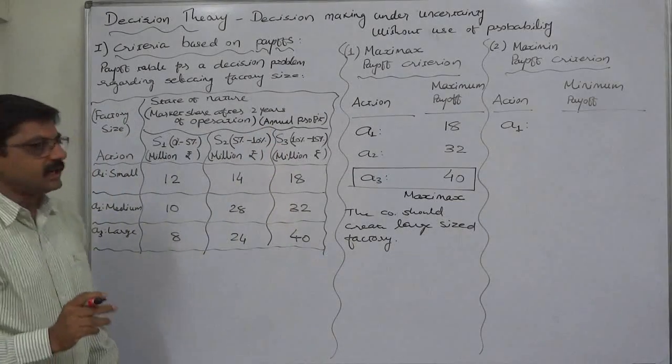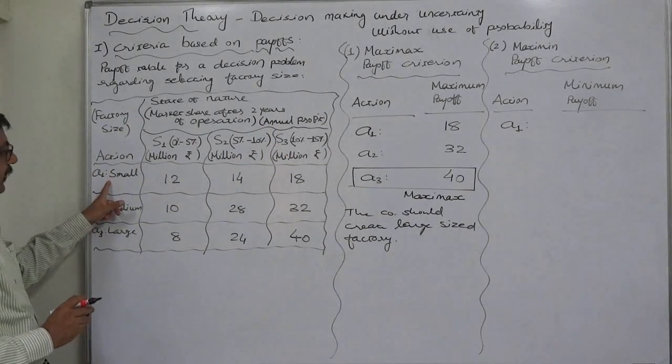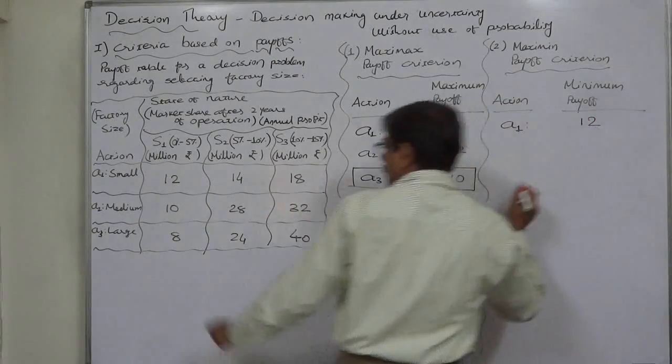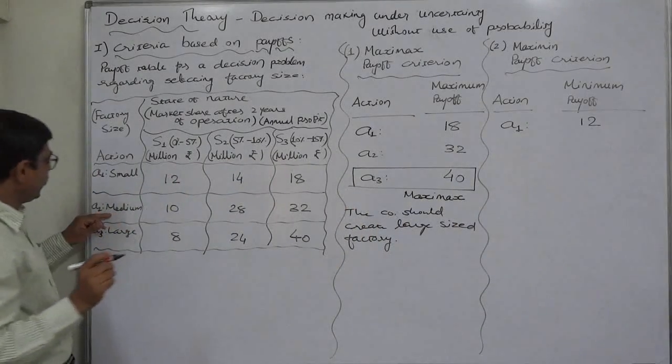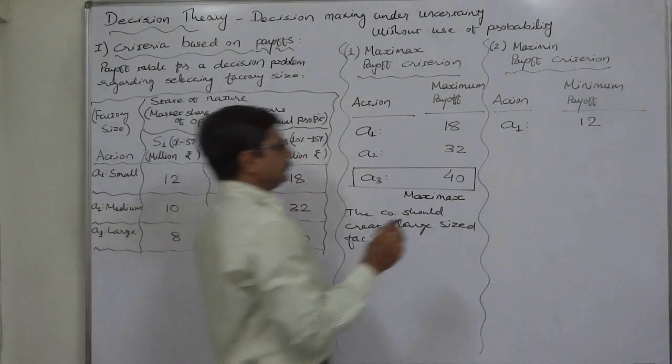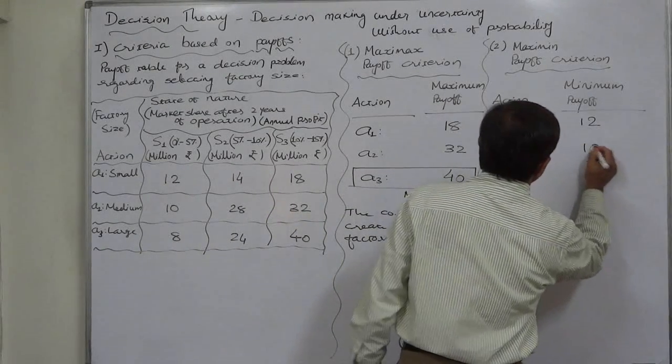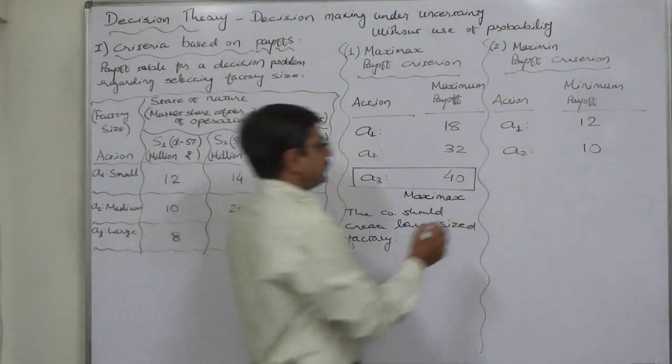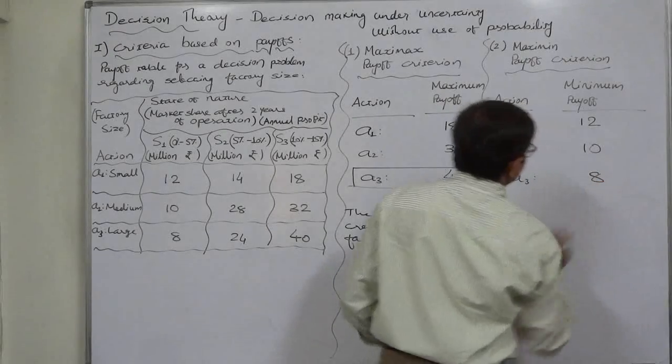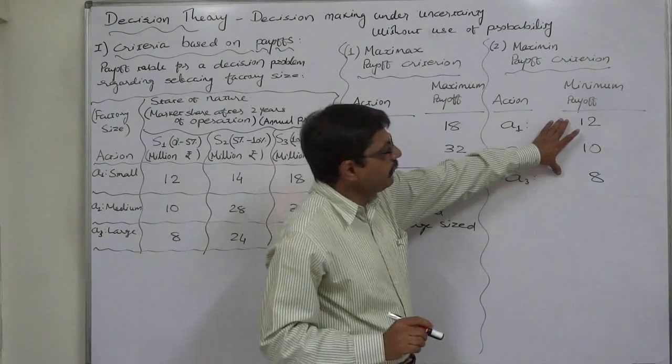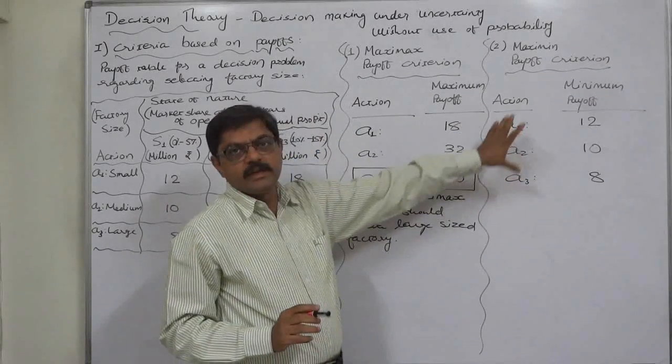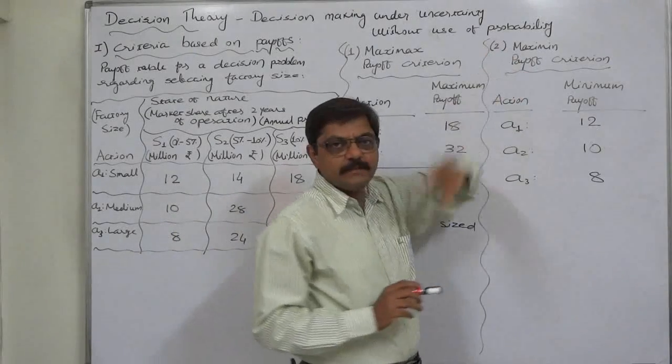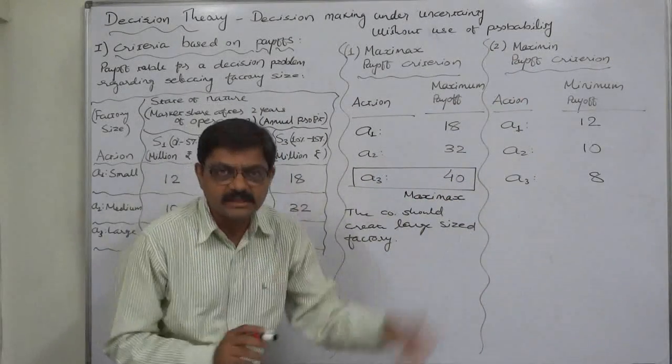In case of A1, minimum is 12. In case of medium, minimum is 10. And in case of A3, minimum is 8. So this is the list of minimum possible payoff from all the alternatives or actions. Now the payoff criterion is maximin, that means we need to select the maximum out of the list of minimum payoff.